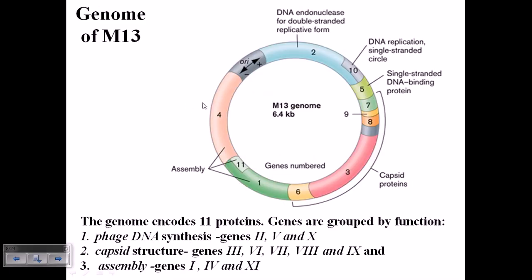If we circularize the genome into one circle, we can find several clusters. The genome usually encodes for 11 proteins — some are structural, some required for other functionality. Among them, the Group 1 proteins are called the phage DNA synthesis proteins, encoded by gene 2, gene 10, and gene 5. These three genes are responsible for production of the proteins required for DNA synthesis of the bacteriophage.